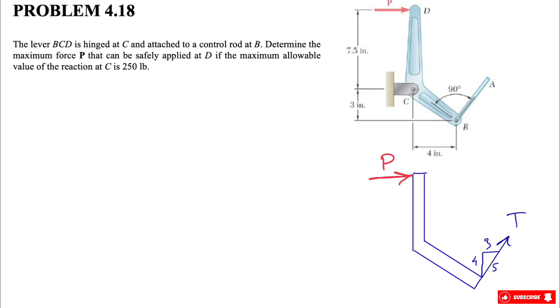So we have a pin at point C, which means we have both x and y components. This will be our Cx and this will be our Cy. In the previous video, we explained why these angles and why these dimensions are 3, 4, 5, and why the direction for the tension is in this way.